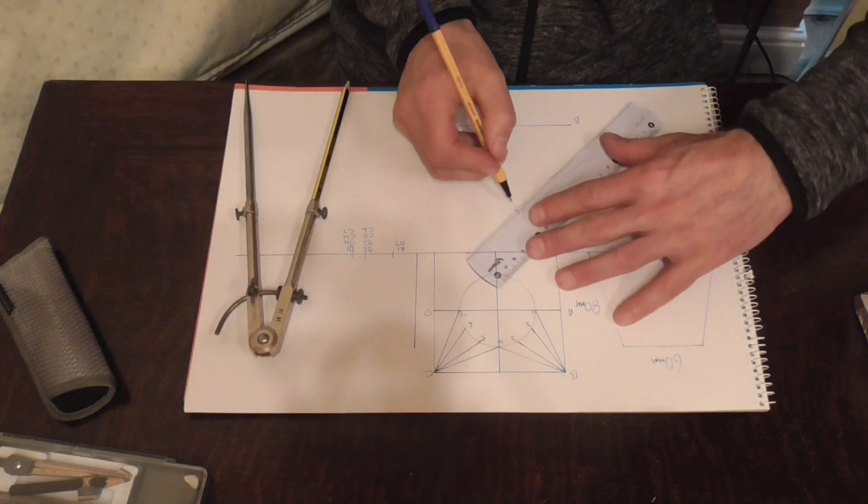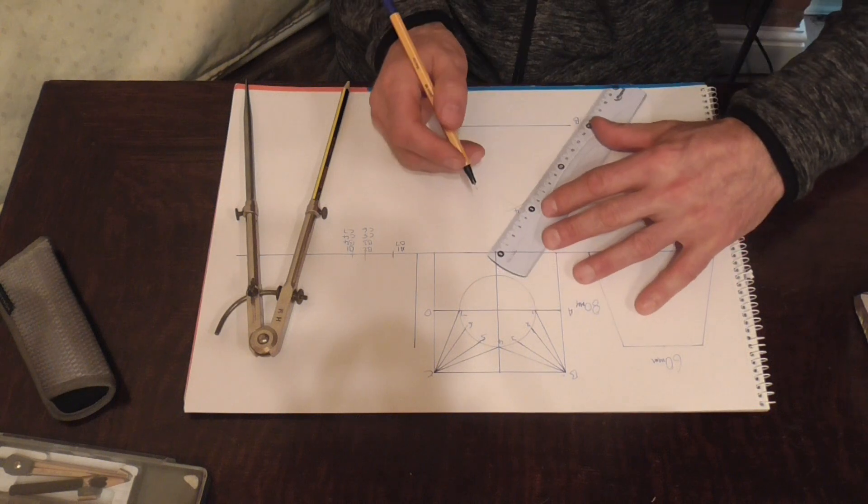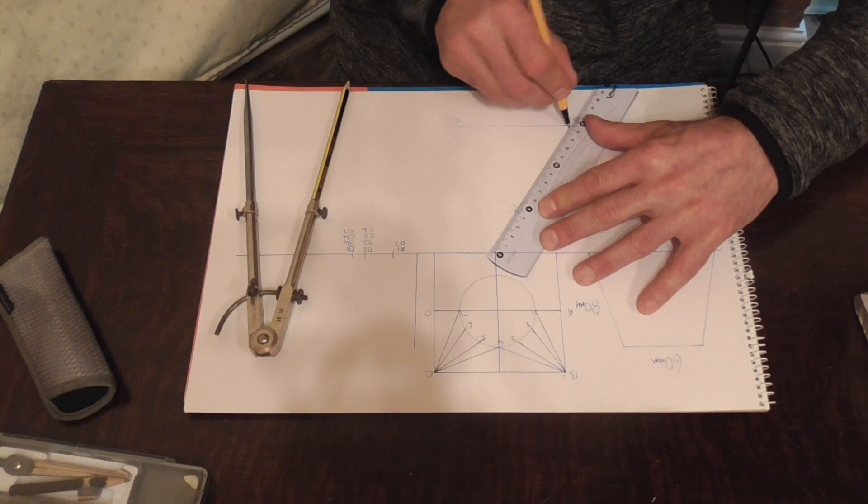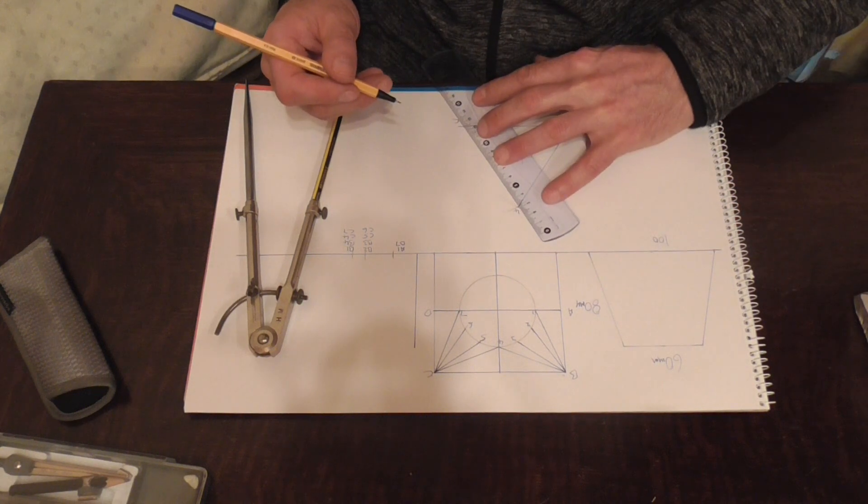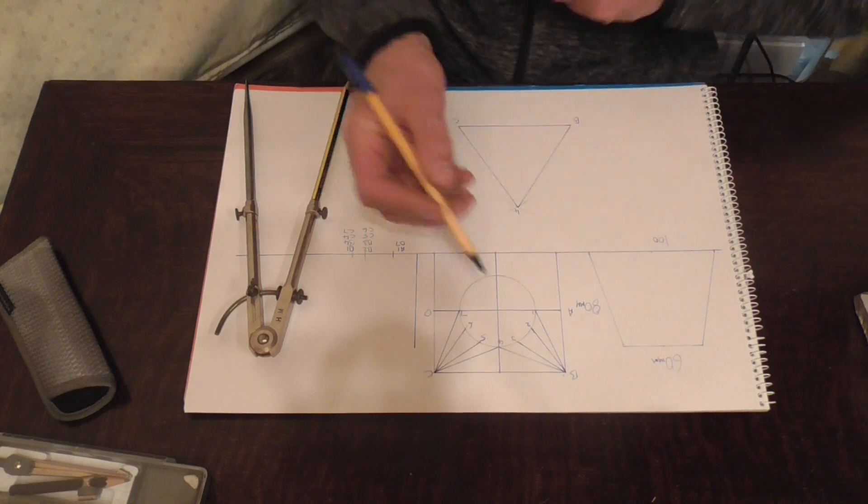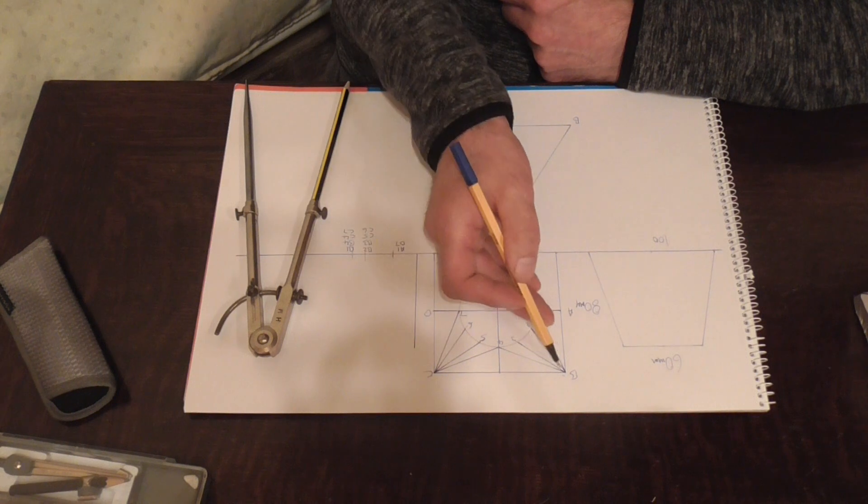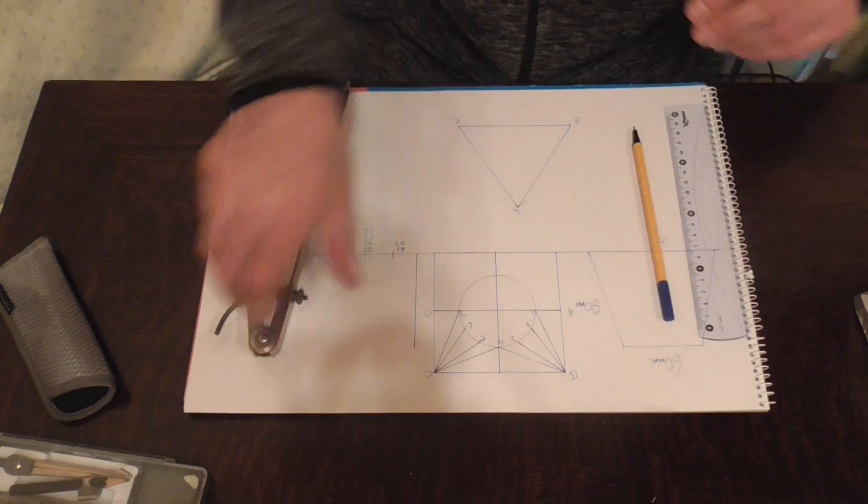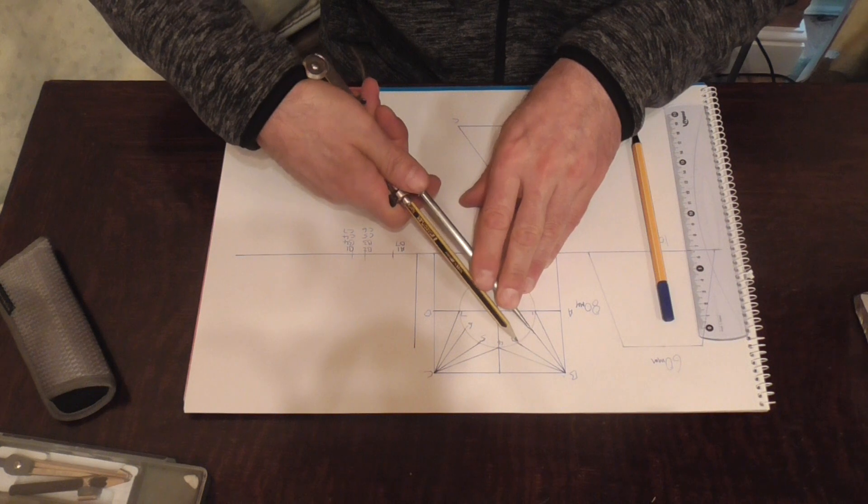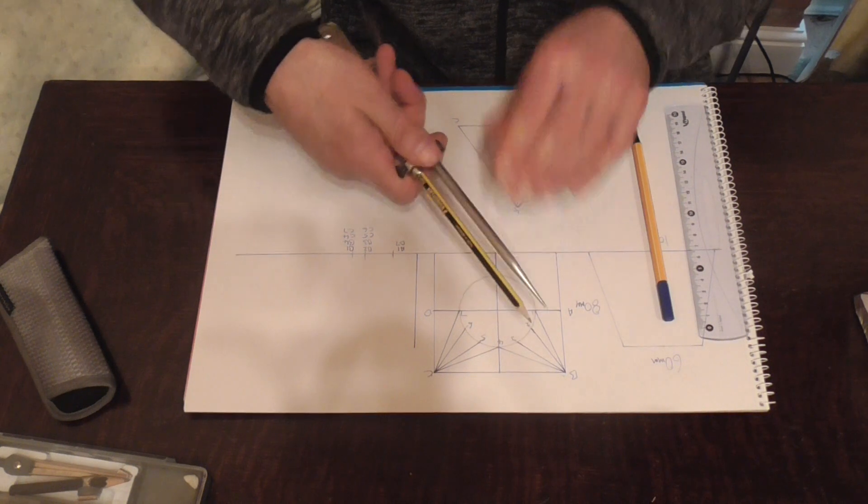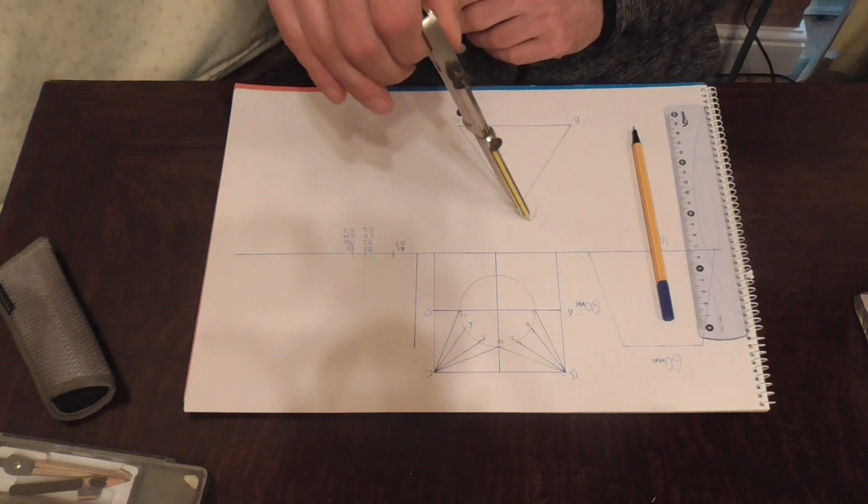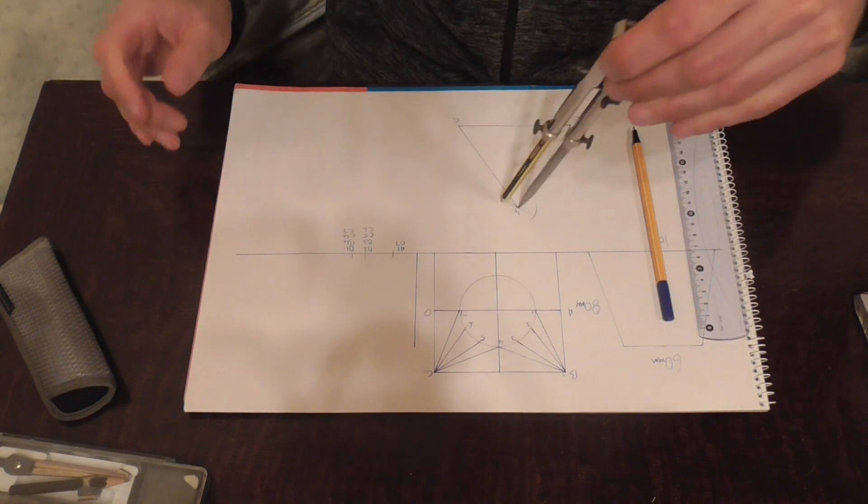What we've done is we've drawn this triangle here. So what we need to do now is take our dividers and open up to any one of these positions because they're all the same, it's a symmetrical shape. And we just place that on the top, put a scratch in, and the same on the other side.